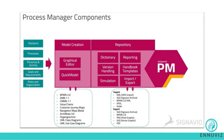Signavio Process Manager is basically divided into two segments. Number one is model creation, used for graphical editing and quick model creation. The second segment is a repository, which has features such as a dictionary, revision handling, simulation, comparison, and reporting.